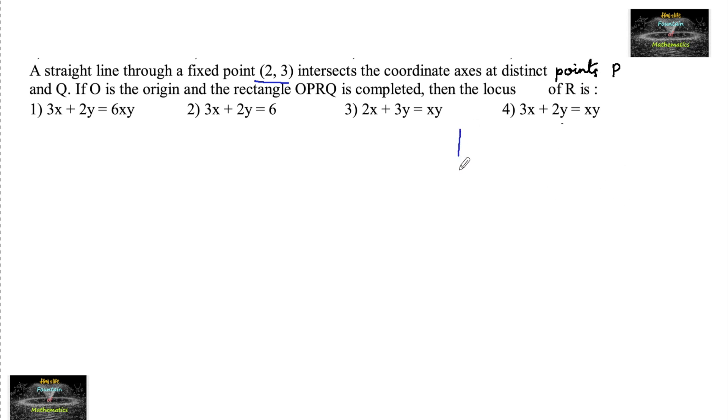So there is a straight line passing through a fixed point, intersecting the coordinate axes at points P and Q. Let us say this point P and this is Q.